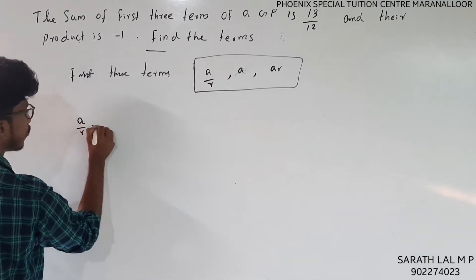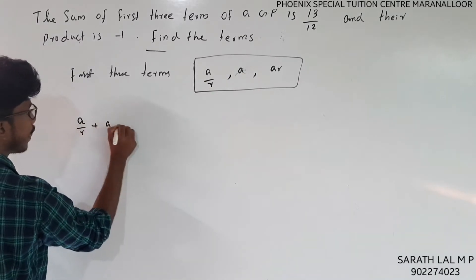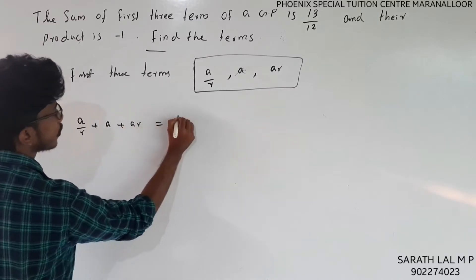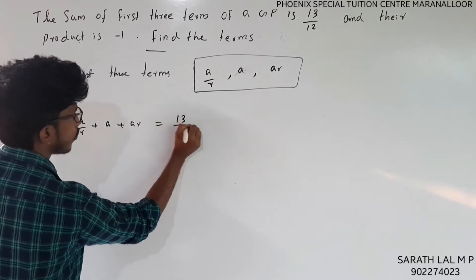The sum of the GP terms is: a/r plus a plus ar, which equals 13 by 12.